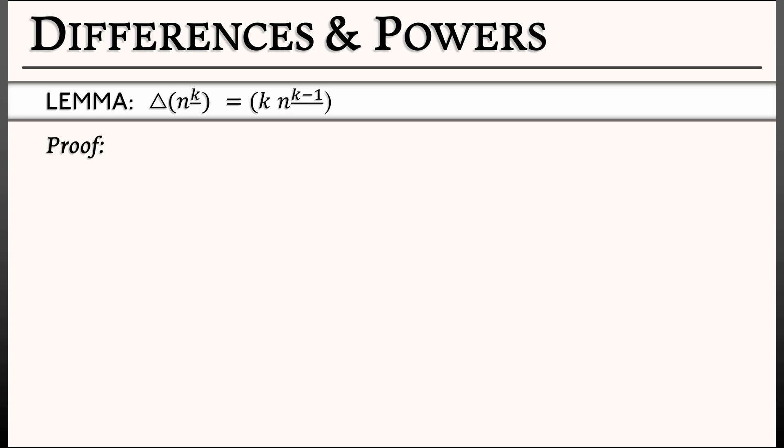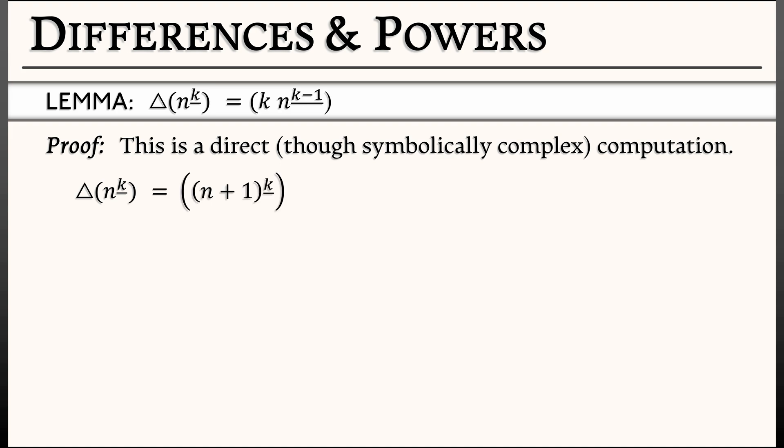Now the proof of this is direct. There's no tricks, but it is kind of complicated symbolically. So stick with me as we work through this. What's the forward difference of n to the falling k? By definition of the forward difference, it's n plus 1 to the falling k minus n to the falling k.